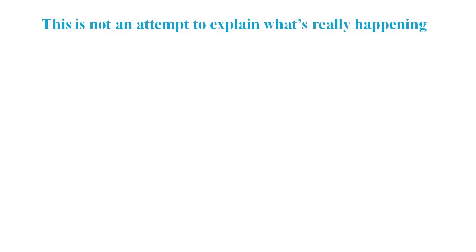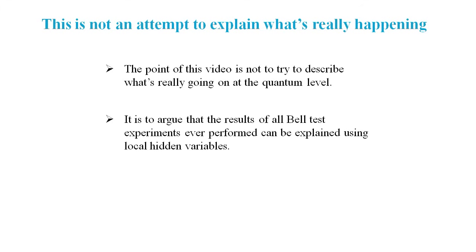Now I think it's important to just clarify what this video is all about. It's not in any way an attempt to say what's really happening at the quantum level. It's to put forward an argument that the results of Bell test experiments can be explained using local hidden variables.